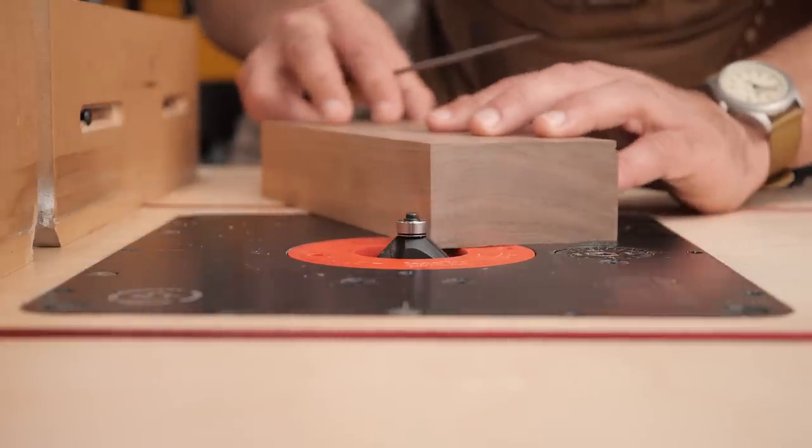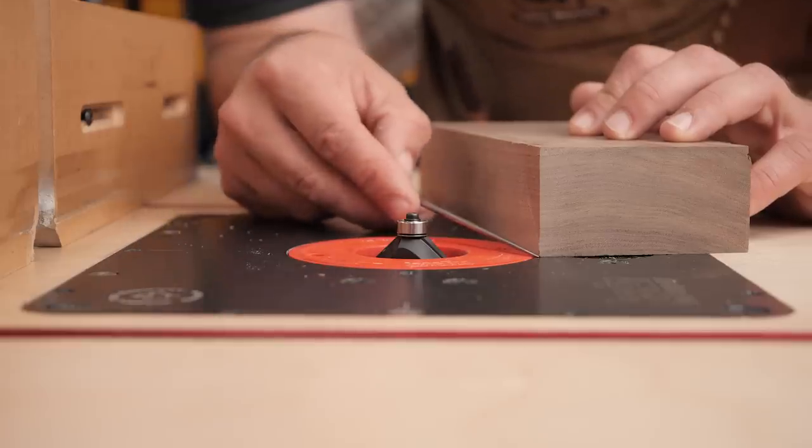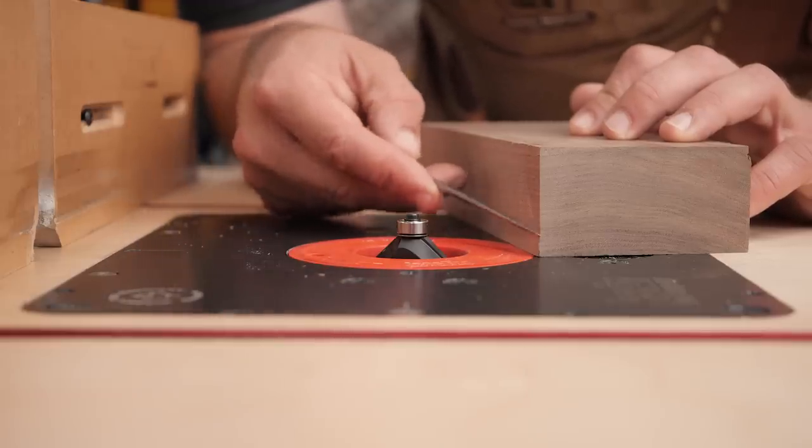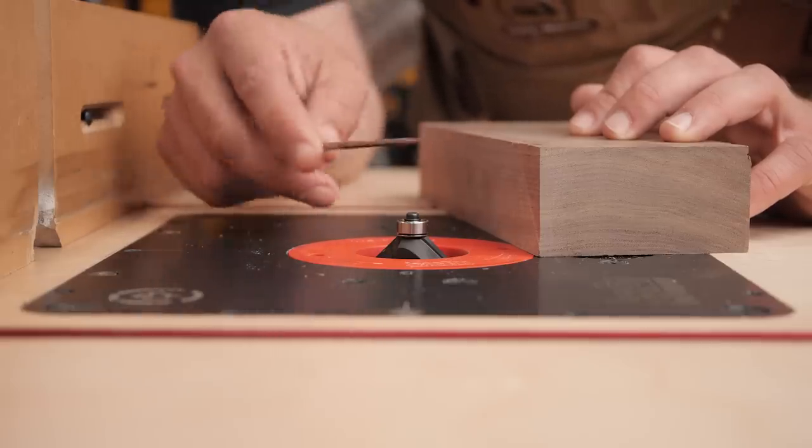And then when you do your long grain it cleans it up because where the bit was cutting is at the same depth. So it never would have torn out above that line because there's no forces on it. Now I know that can be kind of confusing, so let's look at this in high speed.